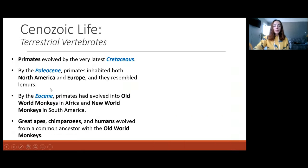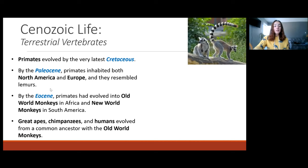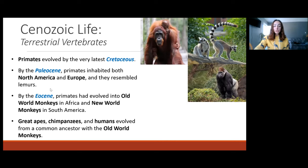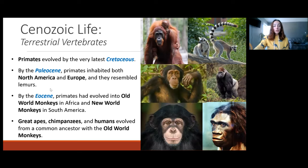Moving on to primates — primates had evolved by the latest Cretaceous in the late Mesozoic, and by the Paleocene in the early Cenozoic, primates had inhabited both North America and Europe, and they resembled lemurs. However, by the Eocene, primates had evolved into Old World monkeys in Africa and New World monkeys in South America, which are just the terms we use to describe these two physiologically different groups of primates — the old and new has nothing to do with time. Regarding great apes, chimpanzees, and humans, we all evolved from a common ancestor with Old World monkeys.